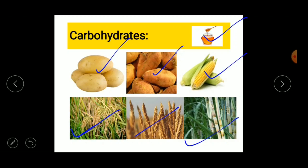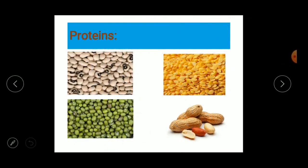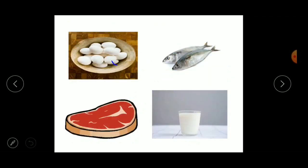The next nutrient is protein. Proteins help in the growth of the body. The sources of proteins include cow beans, toor dal, green gram, and groundnut. Apart from grains, proteins are also present in eggs, fish, meat, and milk. By eating these food items we can get proteins.